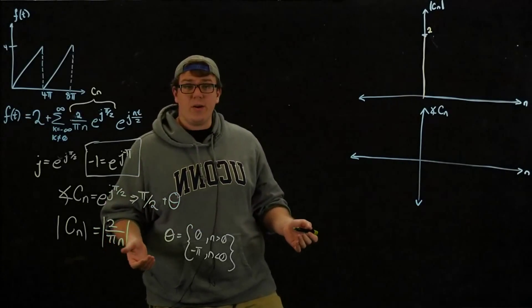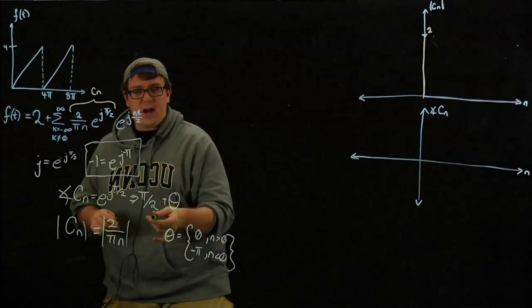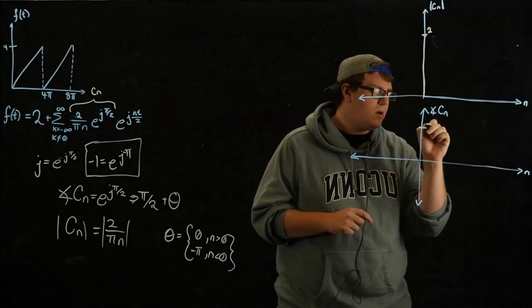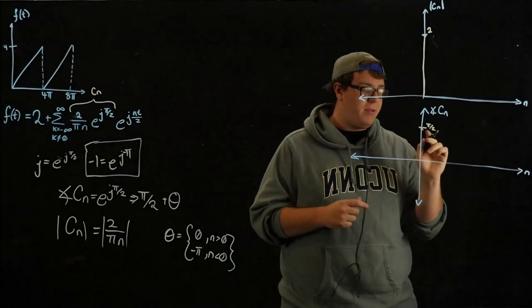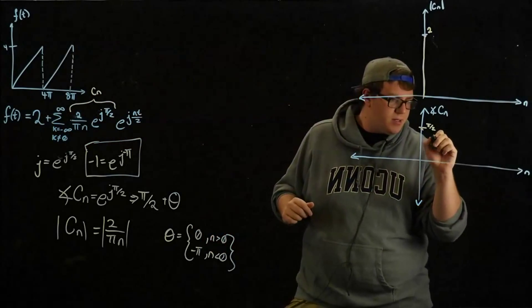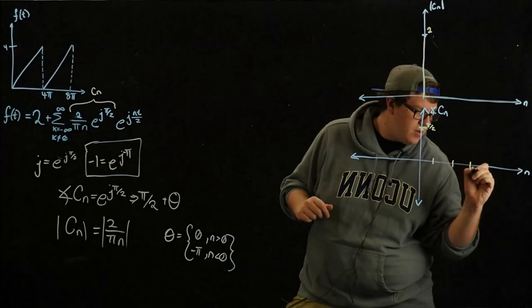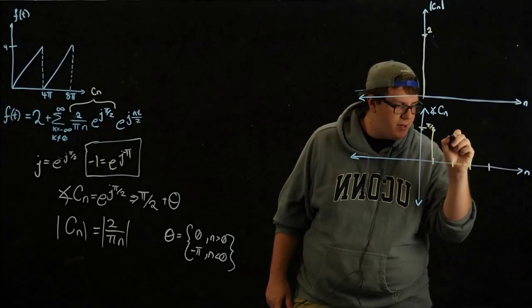So very quickly, we can draw the phase plot because we know that it's going to be a constant pi over 2. Pi over 2. And there's no phase at 0 because we just have a 2. So for N greater than 0, it would be 1, 2, 3, 4, so on. It's just going to be a constant pi over 2.